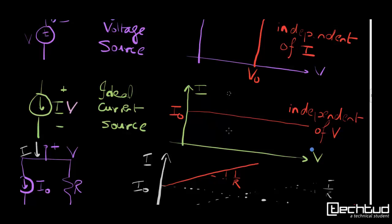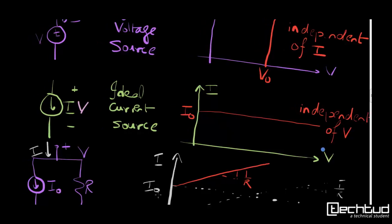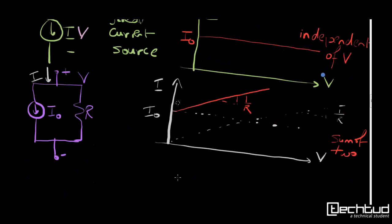Now what happens if you connect a resistance across a constant current source? Then what we will see is a combination of first and third curve.